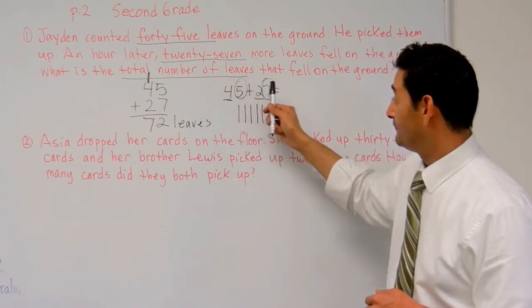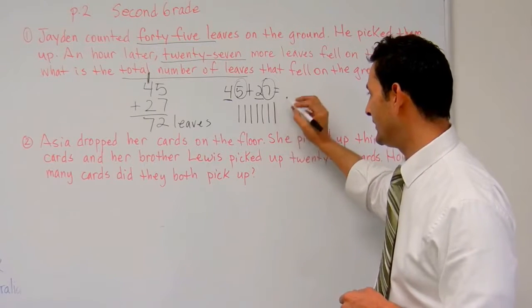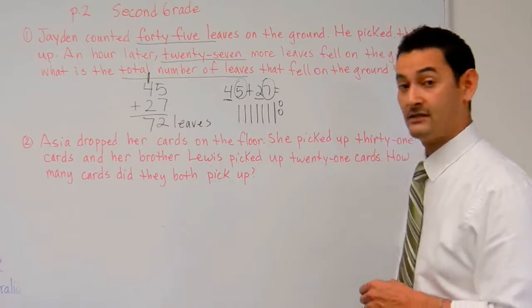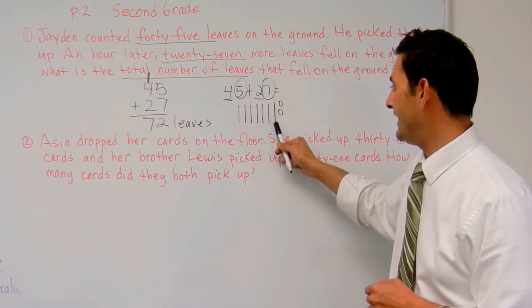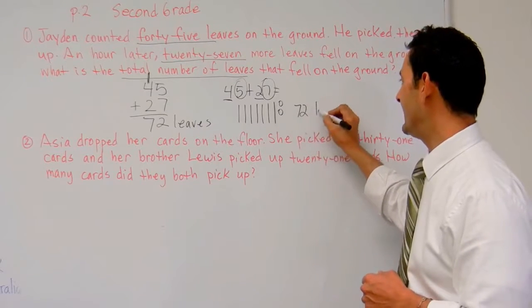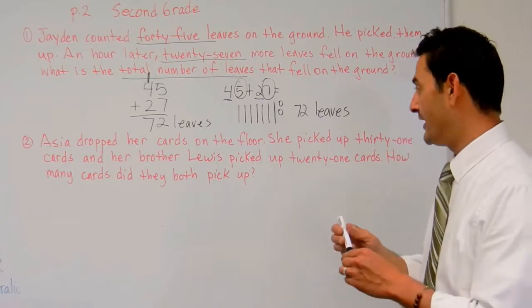Here, 5 plus 7 is 12, okay? So, if we have 12, that's going to be 1 more bundle and 2 ones. So, let's go ahead and count. 10, 20, 30, 40, 50, 60, 70, 71, 72. So, here we have also 72 leaves. So, that's another way you can do it.